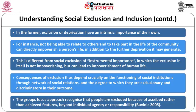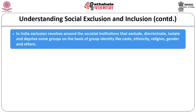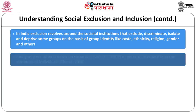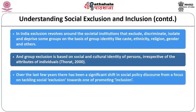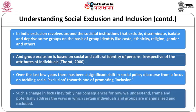Consequences of exclusion depend crucially on the functioning of social institutions through networks of social relations and the degree to which they are exclusionary and discriminatory. The group-focus approach recognizes that people are excluded because of ascribed rather than achieved features, beyond individual agency or responsibility. In India, exclusion revolves around societal institutions that exclude, discriminate, isolate and deprive some groups on the basis of group identity like caste, ethnicity, religion and gender. Over recent years, there has been a significant shift in social policy discourse from tackling social exclusion toward promoting inclusion.